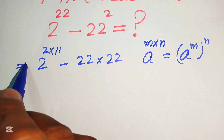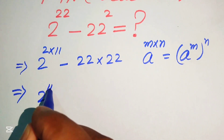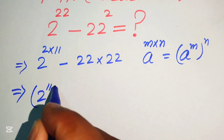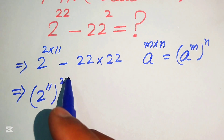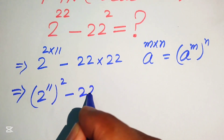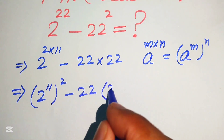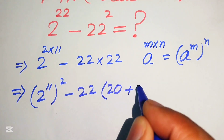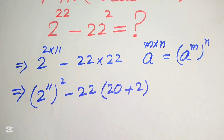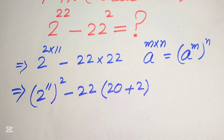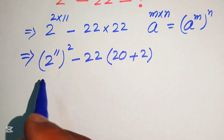According to this exponent law, we rewrite the first term as (2 to the power of 11) whole squared. For the second term, we have 22 multiplied by 22, and we rewrite 22 as 20 plus 2, since 20 plus 2 equals 22.